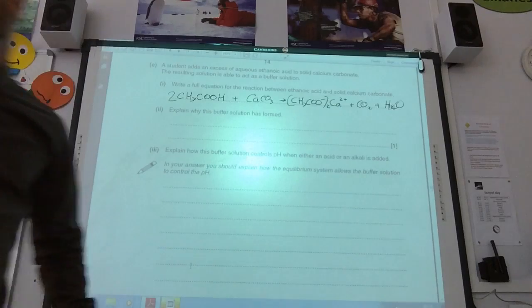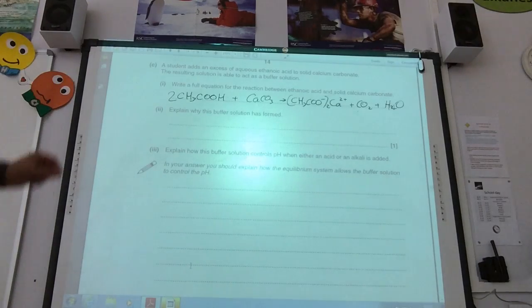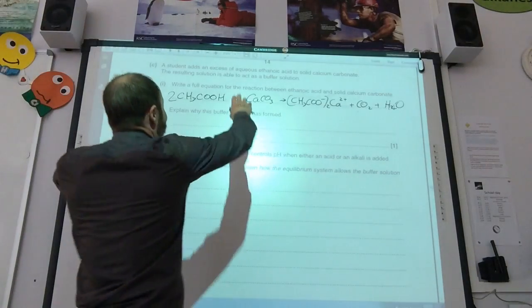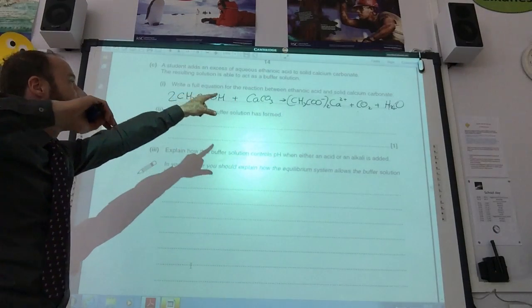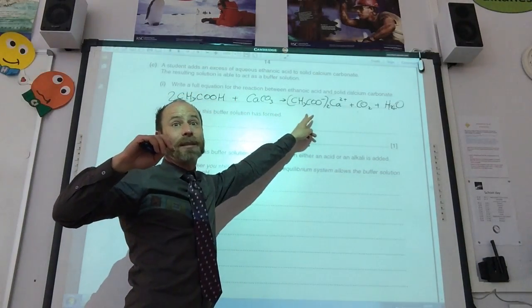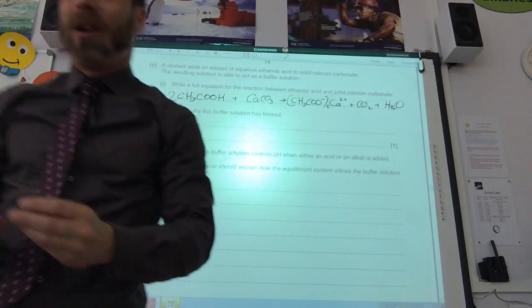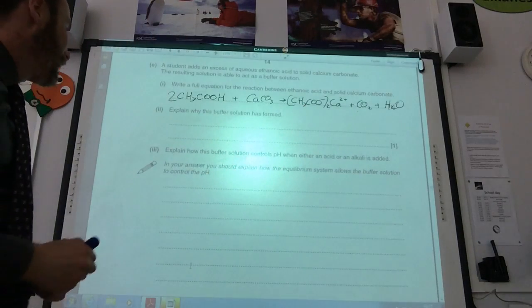Explain why this buffer solution forms. Well, they told me I've got excess ethanoic acid, so I've still got ethanoic acid present, but I've also got the salt of a weak acid present as well. So I've got both things, which is why my buffer is present.